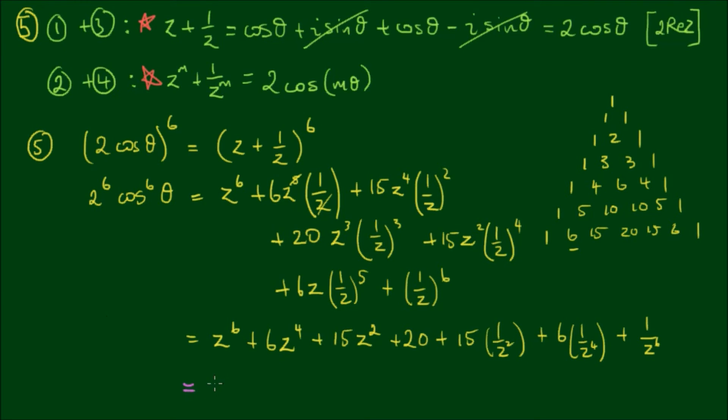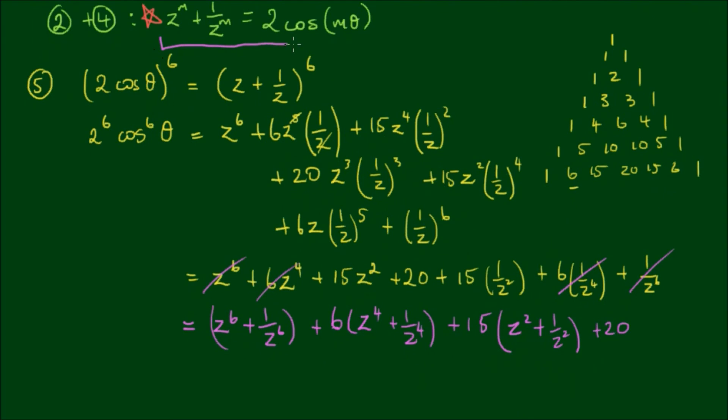Now here's the fun bit. Let's group these. So we have z to the 6th plus 1 on z to the 6th, plus 6 times (z to the 4th plus 1 on z to the 4th), plus 15 by (z squared plus 1 on z squared), plus 20.